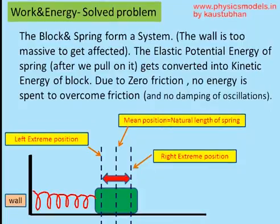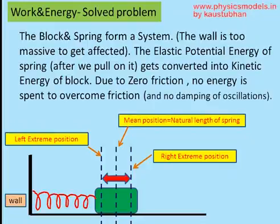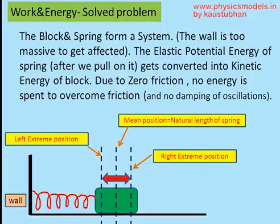Now we pull the block towards the right. The moment we pull the block, we have supplied energy to the block and spring system — we have done work on the spring. Therefore, the work done by us is the elastic potential energy of the spring. Now we release the block, and this elastic potential energy gets fully converted into the kinetic energy of the block, and the block starts oscillating to and fro.